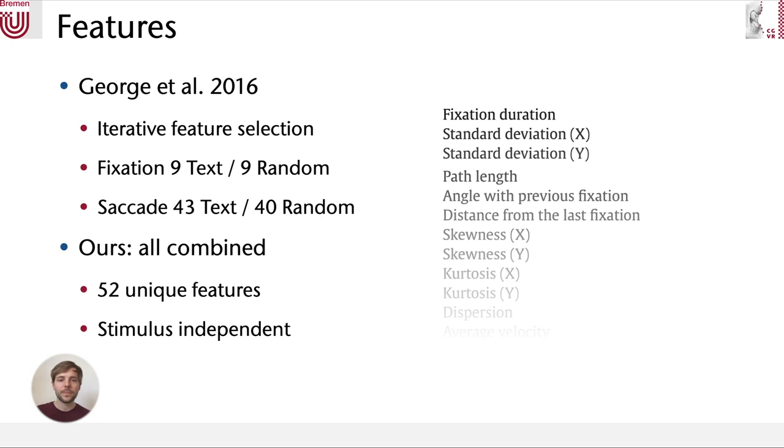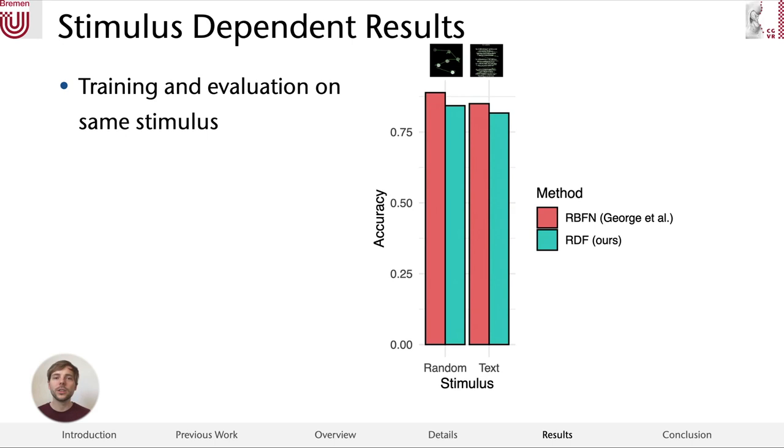In our first experiment, we confirmed that our reimplementation achieves the same accuracy as the original algorithm by George et al. Then, we analyzed whether using random decision forests improves the performance, but found that it actually performs slightly worse. We also found that the stimulus, whether it's text or a random moving dot, doesn't have much of an impact on the accuracy.